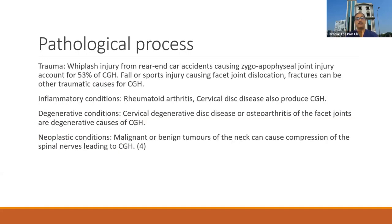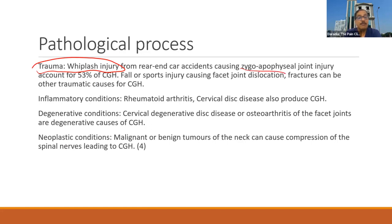What kind of pathological process can predispose these anatomical structures into pain generators? One is trauma — whiplash injury is one of the common causes, where the facet joint or zygapophyseal joint is the source of pain. Inflammatory conditions like rheumatoid arthritis can cause inflammatory arthritis of the facet or atlantooccipital joint. Degenerative conditions such as cervical disc disease or facet joint degeneration. And rarely, malignant or neoplastic conditions can also be responsible.